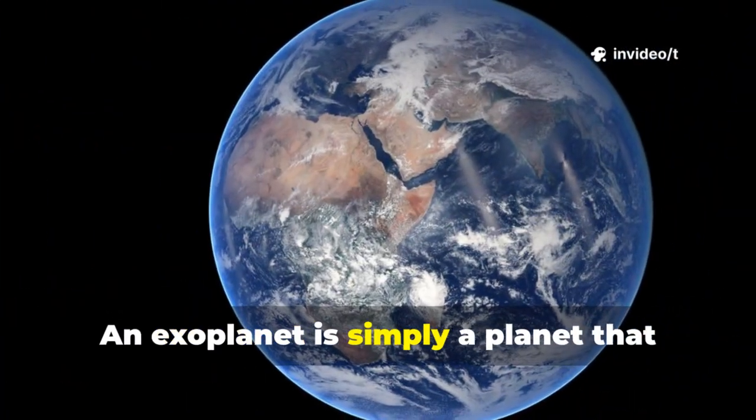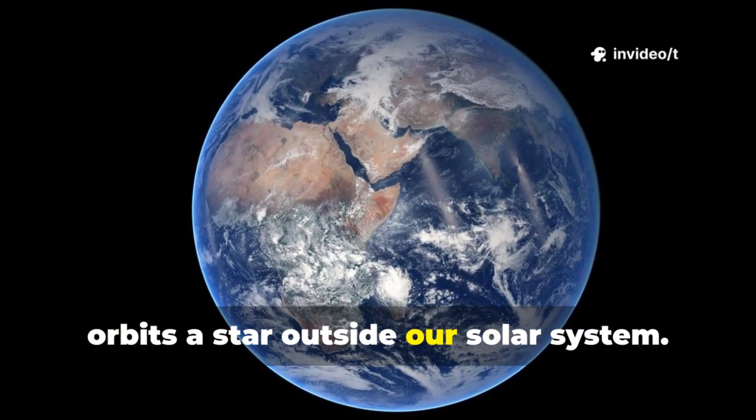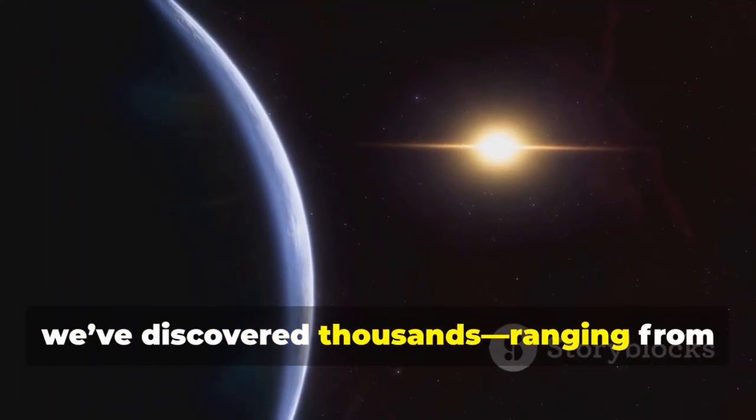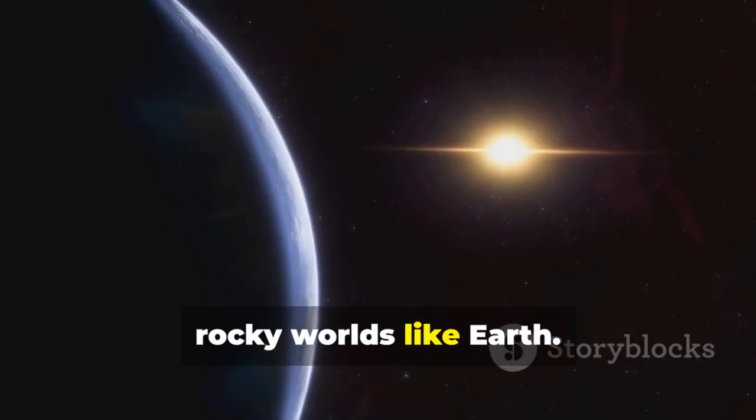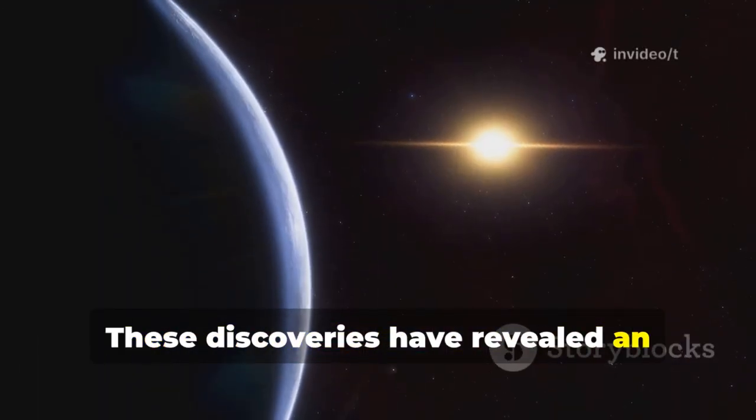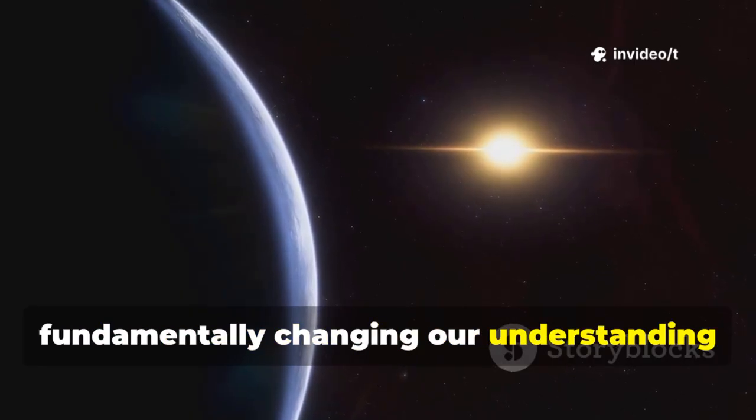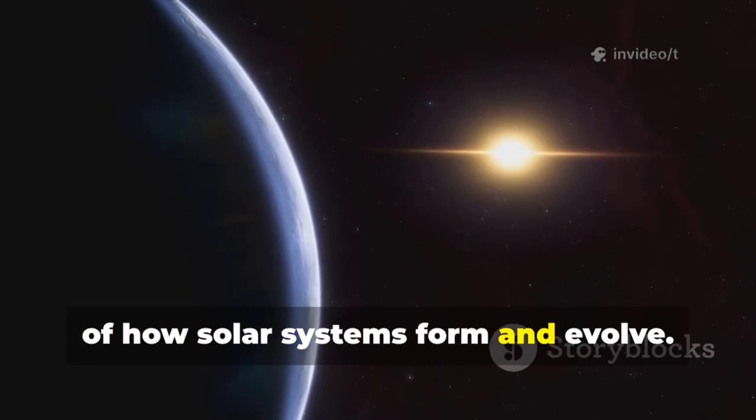An exoplanet is simply a planet that orbits a star outside our solar system. Since the early 1990s, we've discovered thousands ranging from massive gas giants to small rocky worlds like Earth. These discoveries have revealed an astonishing diversity of planetary systems, fundamentally changing our understanding of how solar systems form and evolve.